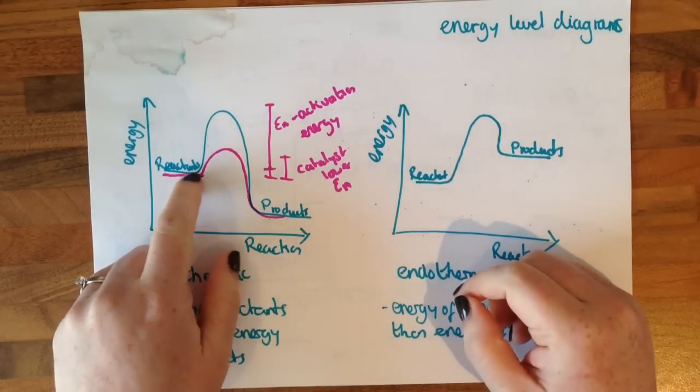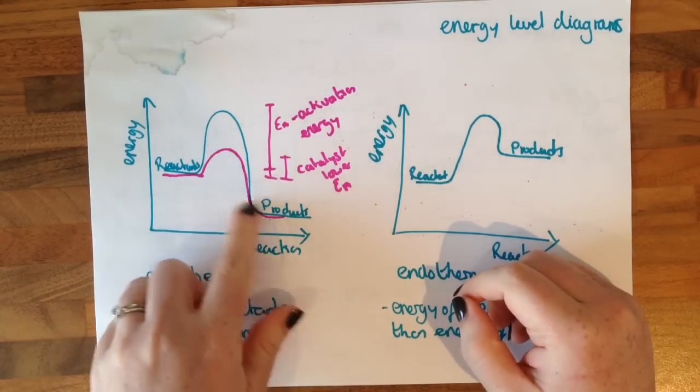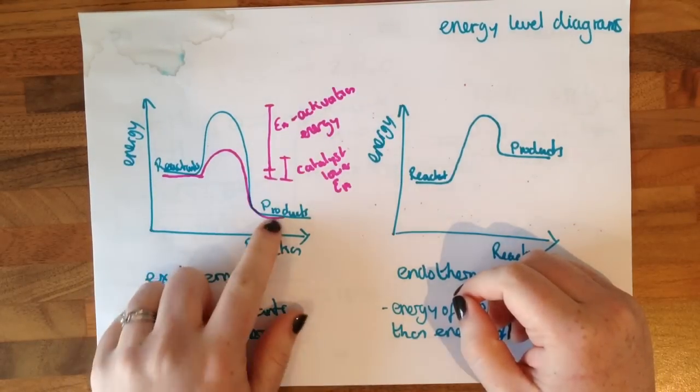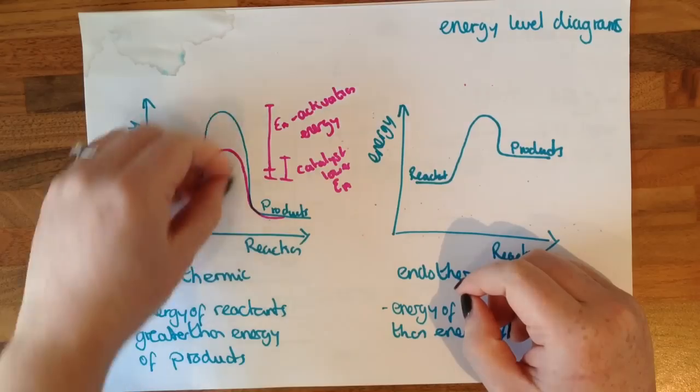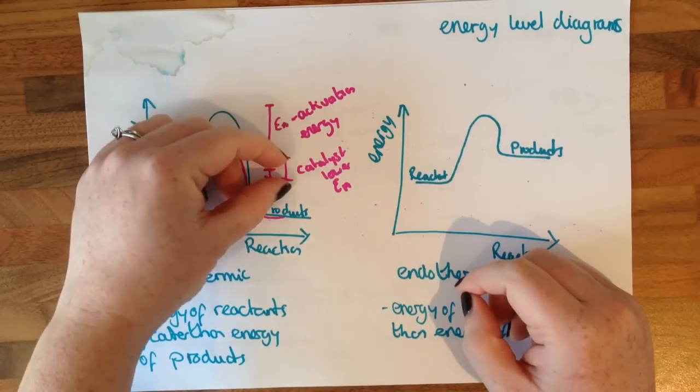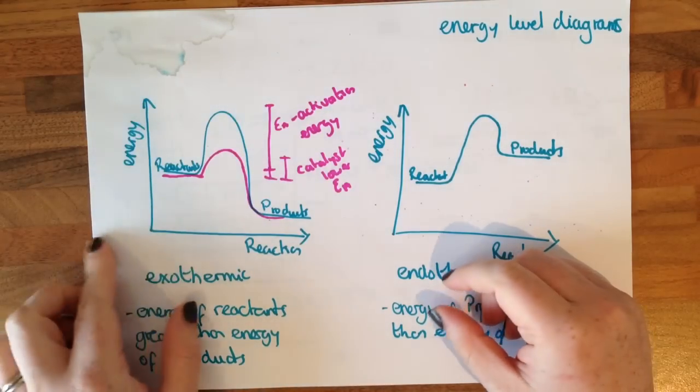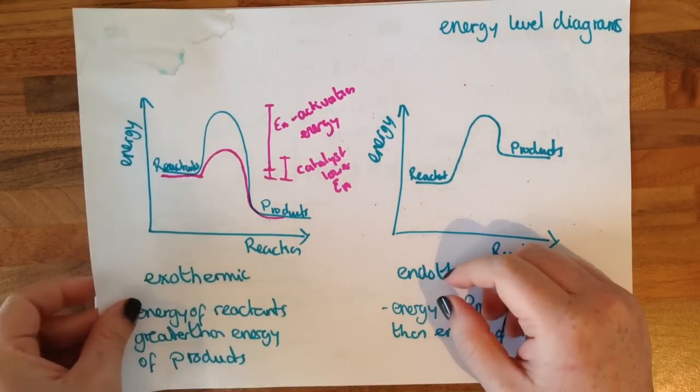If we add a catalyst we get this pink line — it starts and ends in the same place, it just reduces the amount of activation energy needed.